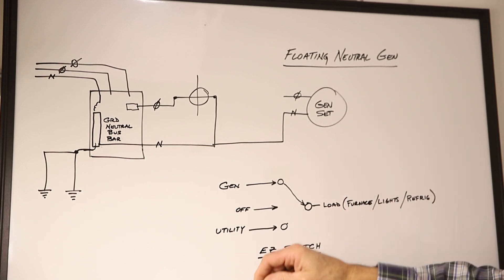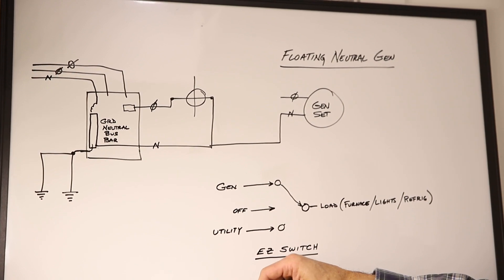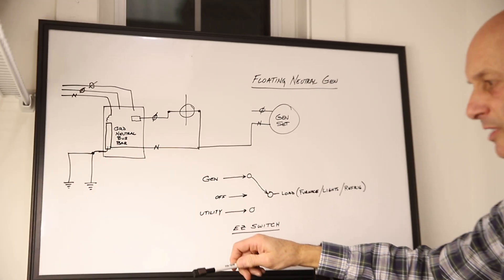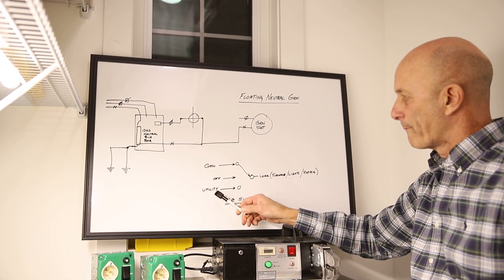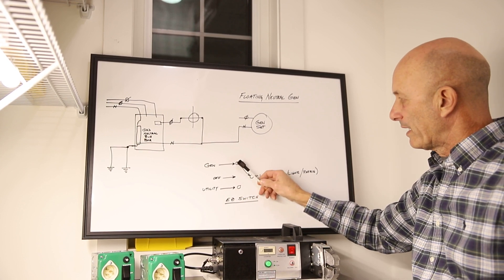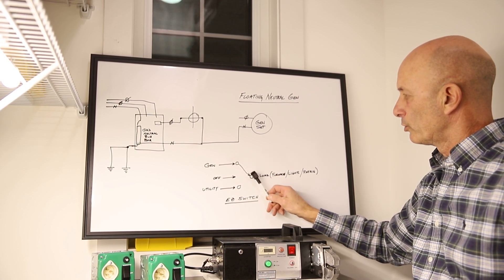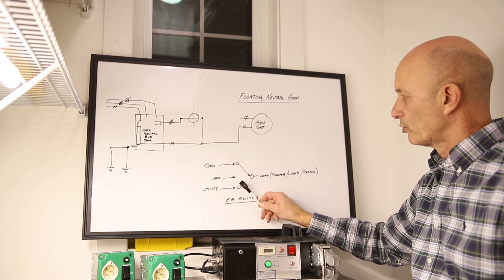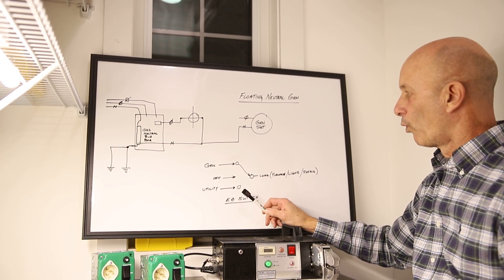So this is why a switch that has a label on it, a standard that meets a UL standard will not back feed. You can only be from the load to the generator, load to off or load to utility. You can't be in more than one.